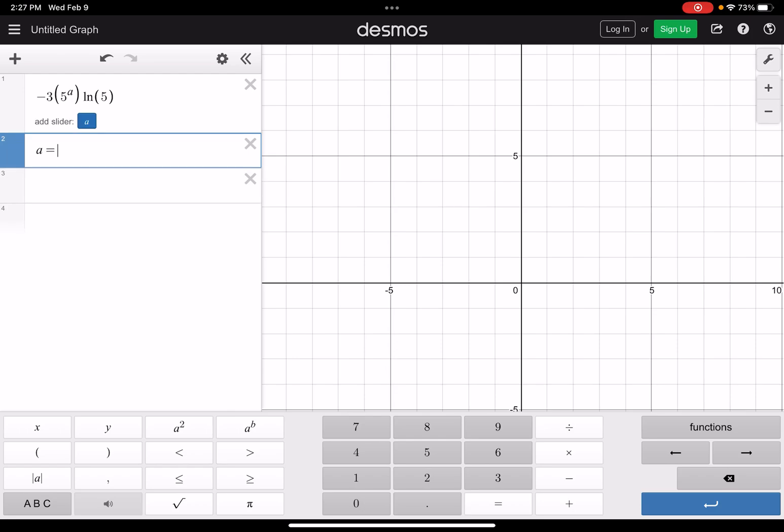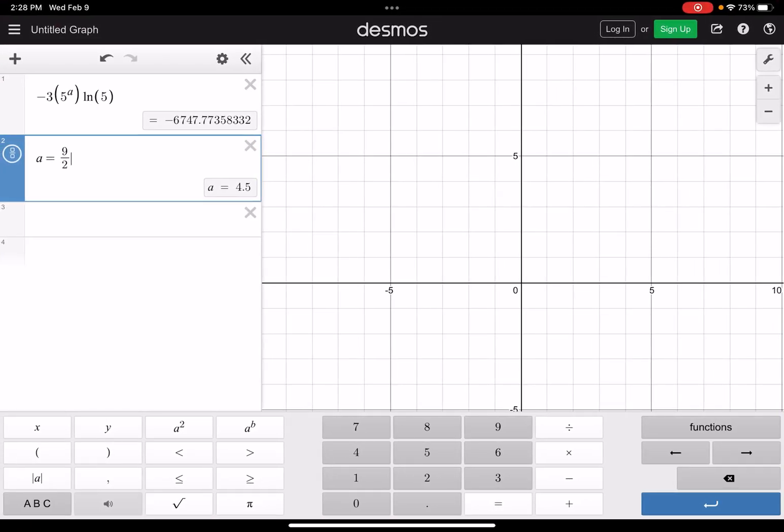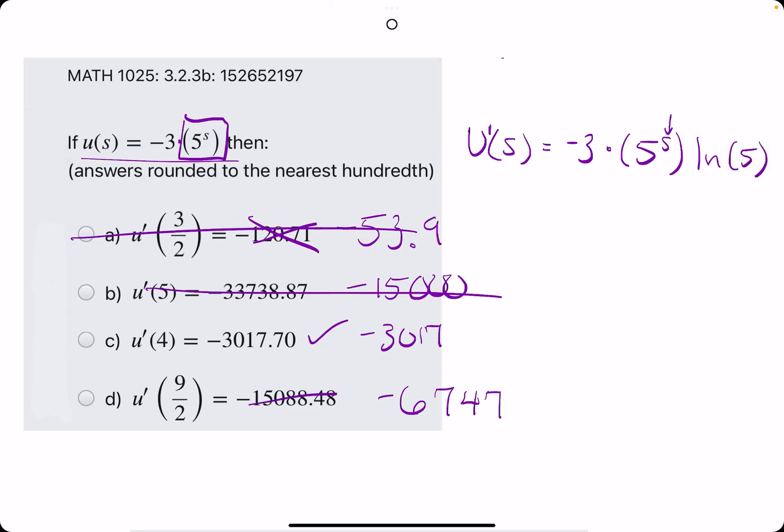And just to confirm, 9 over 2, we get negative 6747. So that does not match that either. So with a substitution way of calculation, we can see that C is our answer.